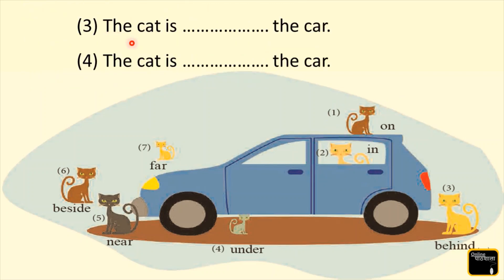Question 3: The cat is ___ the car. Where is the third cat? Where is number 3? Yes, here it is. The cat is behind the car. Now we are going to write here 'behind'.